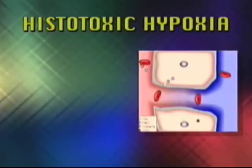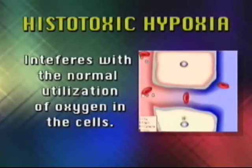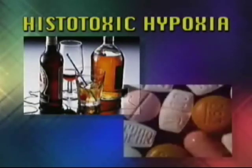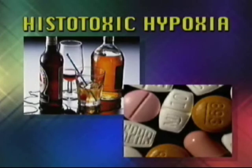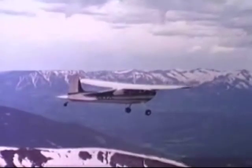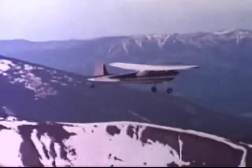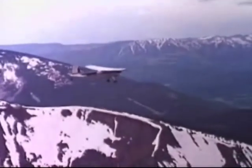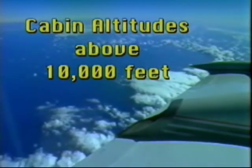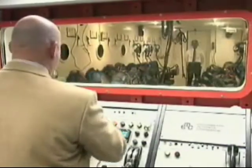Histotoxic hypoxia occurs at the cell level. It interferes with the normal utilization of oxygen in the cells. Alcohol and drugs are two items that can bring about this condition. Individual response to hypoxia varies. Your hypoxia symptoms may develop so gradually that they are well established before you recognize them. Hypoxia symptoms are most noted at cabin altitudes above 10,000 feet. This program, coupled with a flight in an altitude chamber, will better train you to recognize your personal hypoxic symptoms.